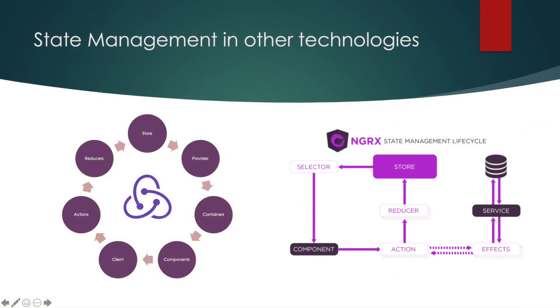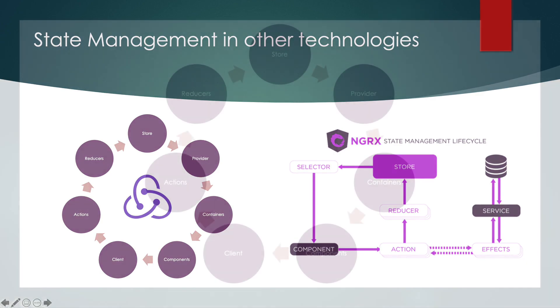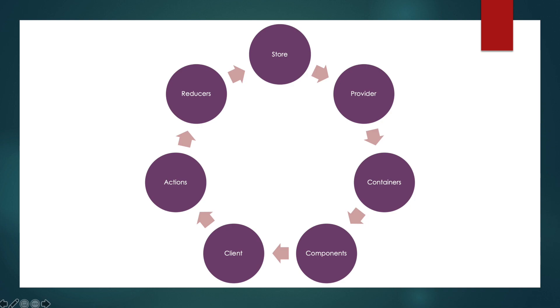Now let's do a round trip of different state management technologies that already exist. The famous one is Redux from React — before that was Flux from Facebook, and Redux was the next generation. Now they are working on a third level called Recoil. Redux uses a unidirectional workflow: you create a store, data goes to a provider, then to a container, to a component, is visualized on the client, gets an action from the user, the action gets processed by a reducer, and the reducer saves the result into the store.